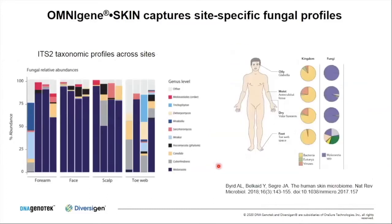Showing the ITS2 taxonomy profile and relative abundance of fungal genera: forearm, face, and scalp samples tend to be dominated by Malassezia, a skin commensal genus very well established on skin, and the most abundant fungal species across most samples. The toe web samples were quite different, showing greater diversity of fungal signatures and genera — something also reported in the literature. So Omnigene Skin can truly capture site-specific fungal and bacterial profiles.